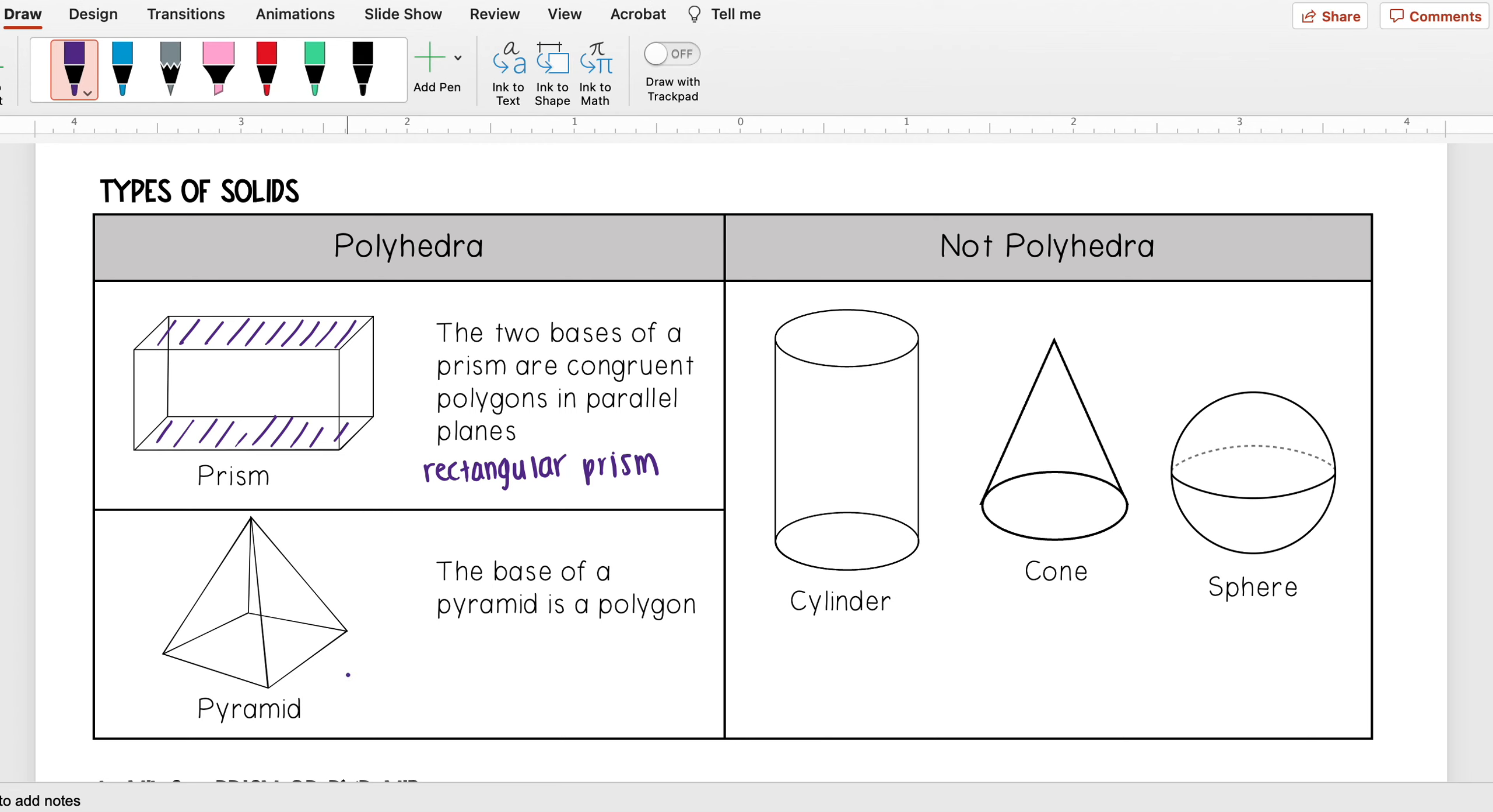And the second type of polyhedron that we see is a pyramid, and that's when the base of a pyramid is a polygon. So for example here, my base is going to be this rectangle again.